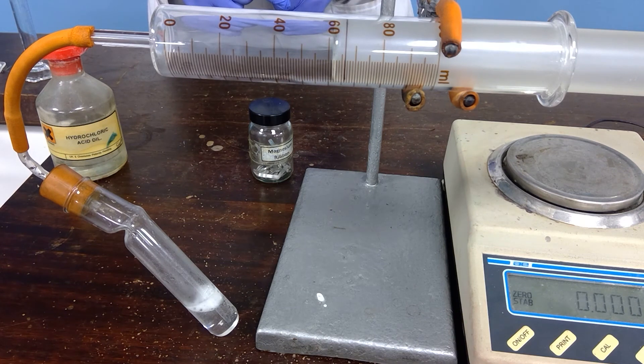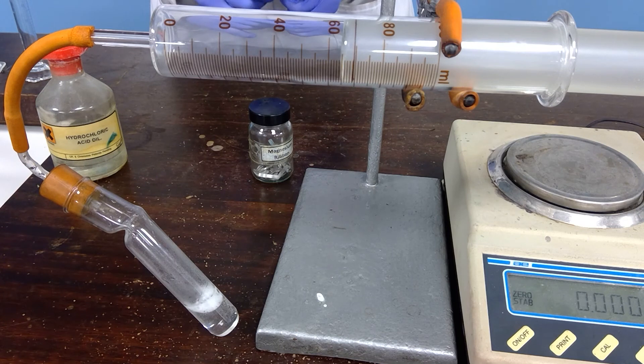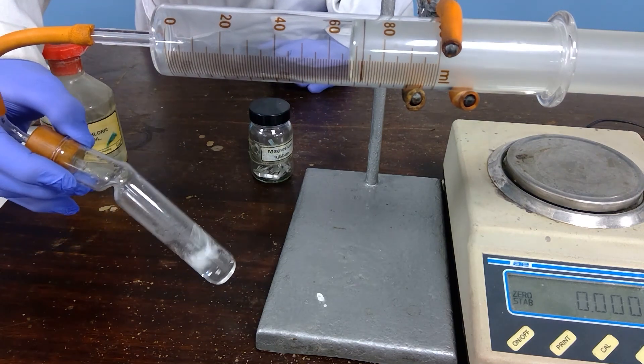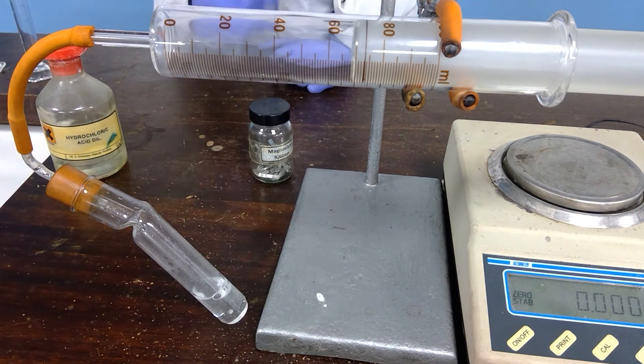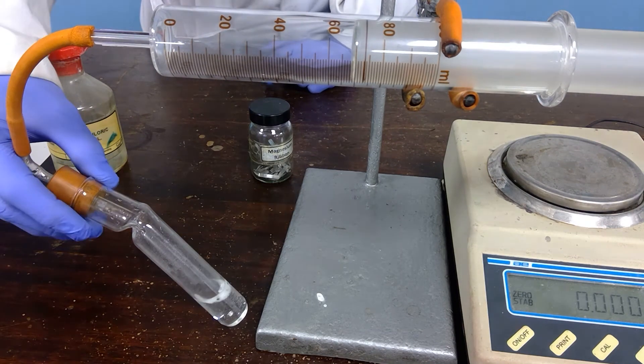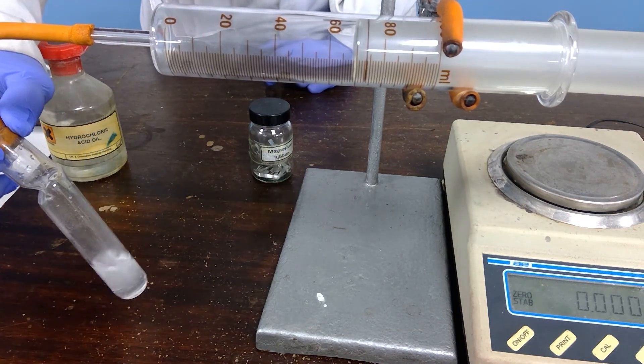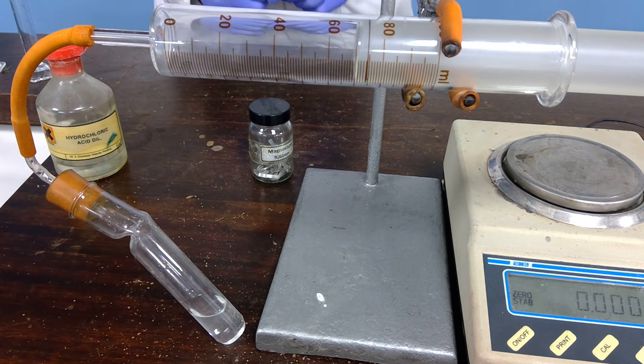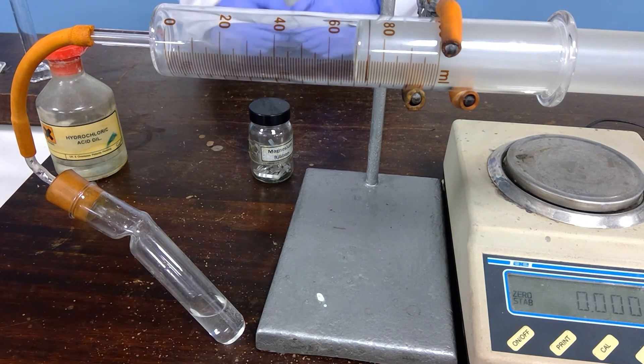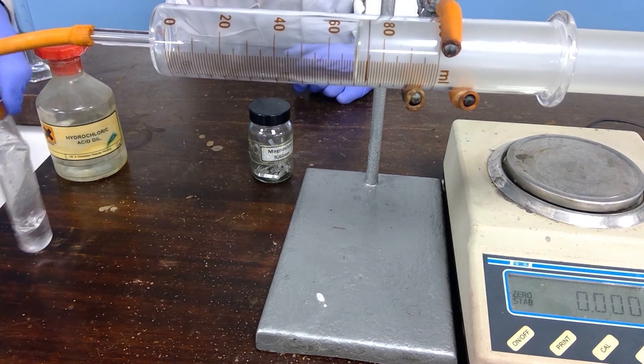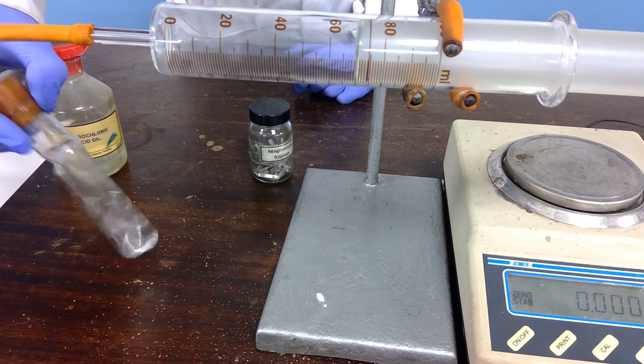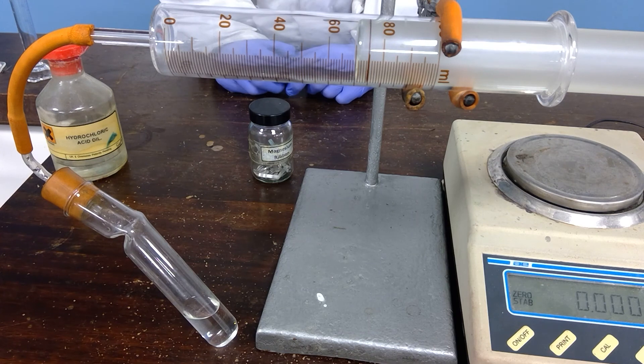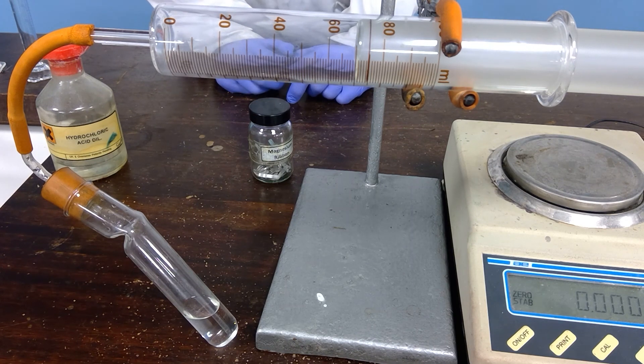And again you need to have a record of both the mass of the magnesium used and the volume. Reaction still occurring as you can see. Just making absolutely certain it's all reacted. And if you'd like to take that reading, we've got three readings for this particular experiment.